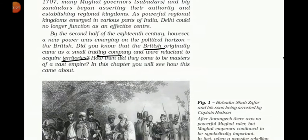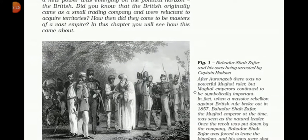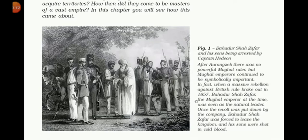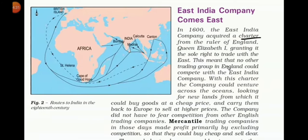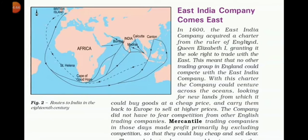With this charter, the company could venture across the ocean looking for new lands from which it could buy goods at a cheap price. The East India Company wanted to buy goods at a very cheap price and sell them in Europe at a higher price, and the company did not have to fear competition. Mercantile trading companies in those days made profit primarily by excluding competition so that they could buy cheap and sell dear.